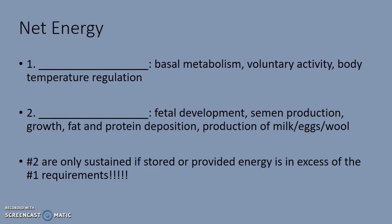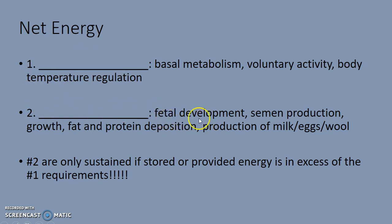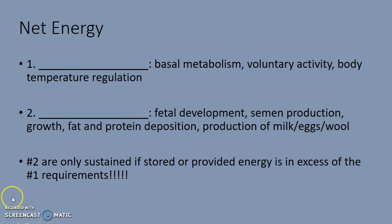So again, the net energy system: number one is net energy for maintenance — basal metabolism, basic bodily functions, voluntary activity, and body temperature regulation. Number two is production — which can be fetal development, semen production, growth, fat and protein deposition, and production of eggs, milk, and wool. This really important factor: production is only sustained if stored or provided energy is in excess of maintenance. We'll pause there and pick up with the next lecture. Thank you.